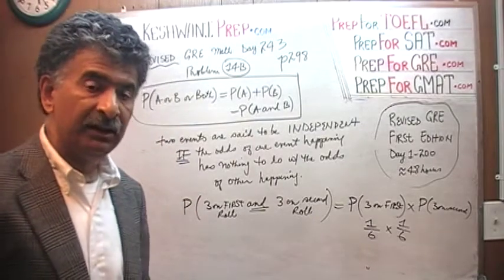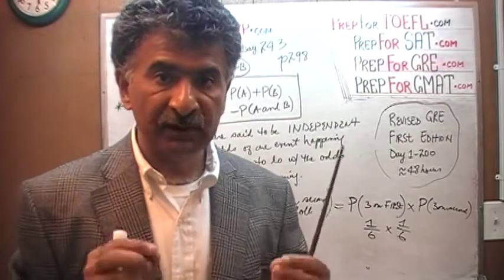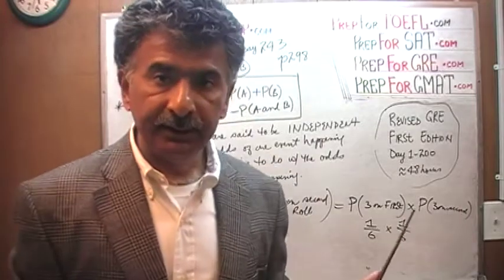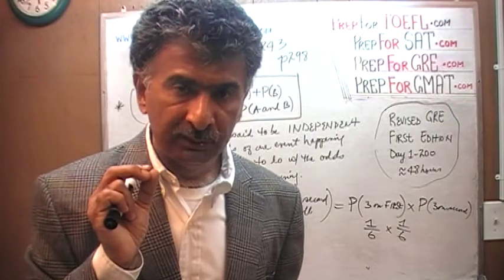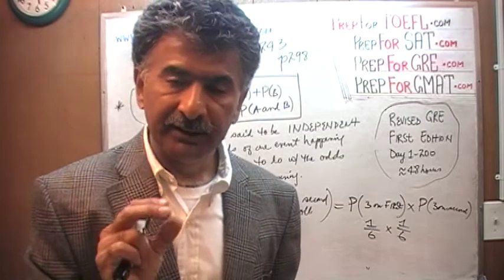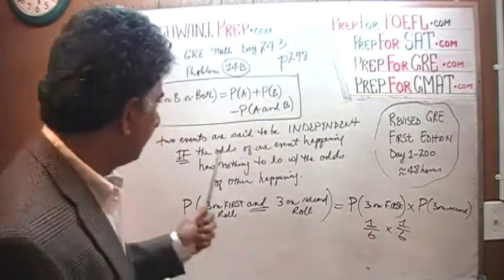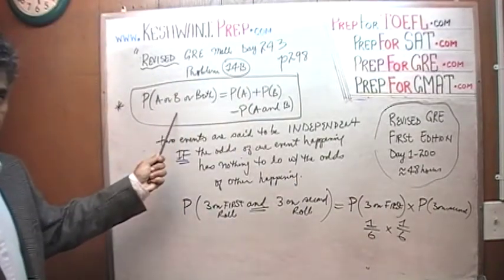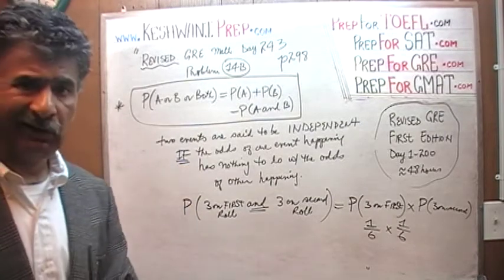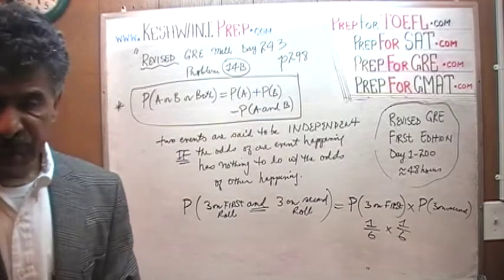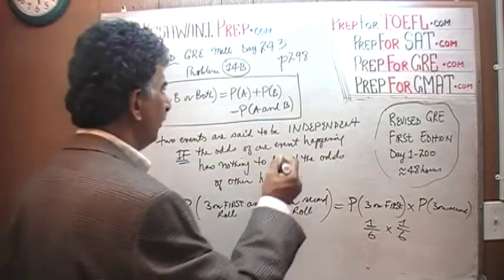Had these two events been mutually exclusive, one would exclude the other. But here, 3 appearing on the first roll does not exclude, does not make it impossible, to get 3 on the second roll. Such events are called independent. This was the fundamental equation we discussed yesterday — this is called the inclusive-exclusive principle.